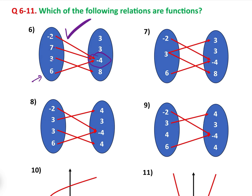Question seven: the element three is mapped to both three and eight. Therefore it does not meet the definition of a function, because it is not mapped to exactly one element of the output — it's mapped to two elements. So that is not a function.